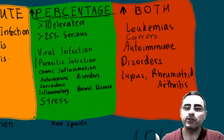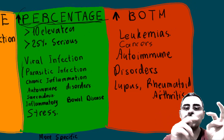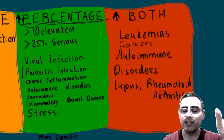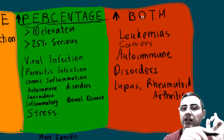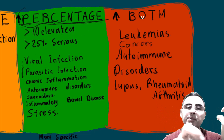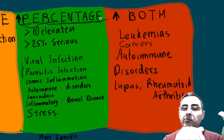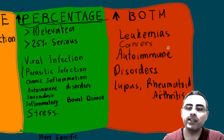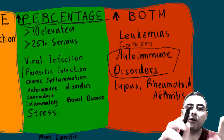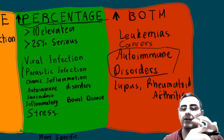When both absolute and percentage monocytes are elevated, these are the most serious conditions — such as leukemias and other cancers, including solid cancers like colon cancer, breast cancer, and lung cancer, where both total white blood cells and absolute monocytes can be elevated. This elevation is also called monocytosis. Several important autoimmune disorders, such as lupus and rheumatoid arthritis, can also cause elevation of both absolute and percentage monocytes.